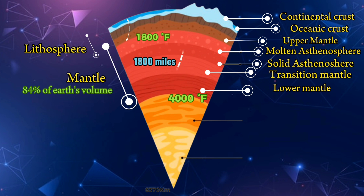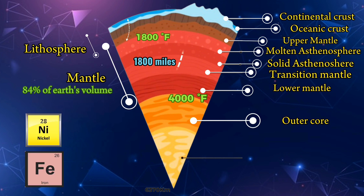The next layer is the outer core, which is basically made up of two molten metals — nickel and iron — that move together as a liquid. The outer core is located about 1,800 miles below the earth's surface and is about 1,400 miles thick. The temperature of the outer core ranges between 4,000 degrees Fahrenheit and 9,000 degrees Fahrenheit.